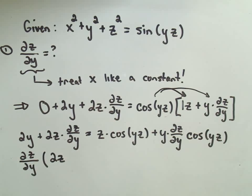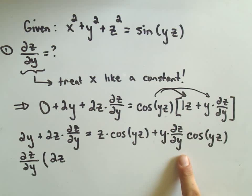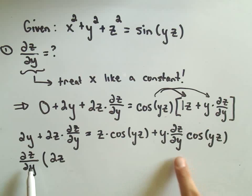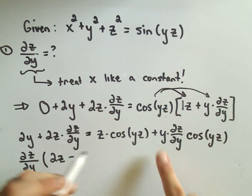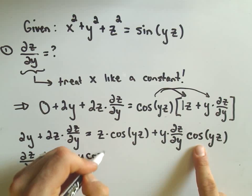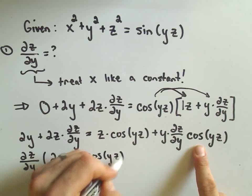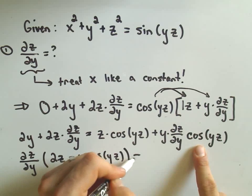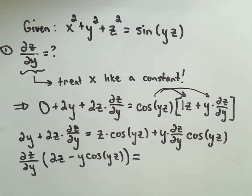Notice the y partial z partial y cosine yz, that's got a partial in there. So if I subtract it over and factor it out, I would be left with minus y cosine of yz term equals.